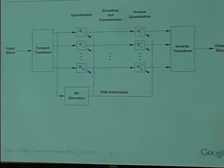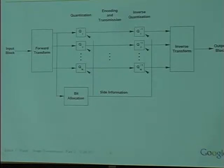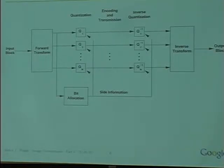Last time we went over what I'd consider to be the main framework for lossy compression: transform coding. We start off with a block of input observations — in image compression, this would be the result of tiling the image into non-overlapping blocks, typically eight by eight. We apply an orthogonal transform which is invertible and preserves energy. By doing that, we've compacted the energy into relatively few components. We can then allocate bits to the components that need them most, reconstruct the transform coefficients at the other end, inverse transform them, and come up with an approximate replica of the original.